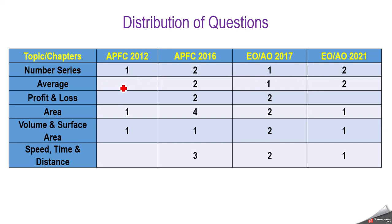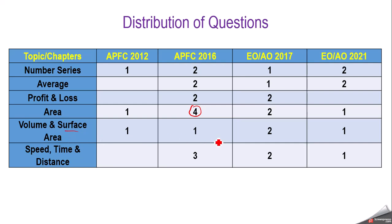We have the average chapter — you can see the distribution of it. From profit and loss we got two questions each time. From area (mensuration 2D) we got questions every time; in APFC 2016 we got four questions from this topic alone. In case of mensuration 3D — that is volume and surface area — we again got questions from this topic consistently.